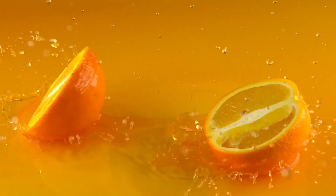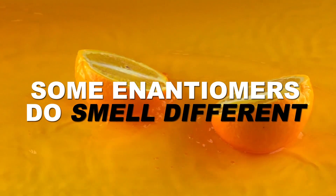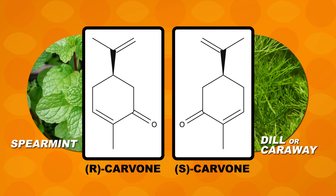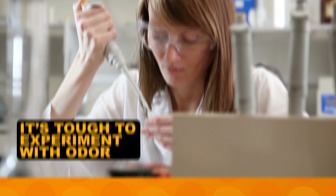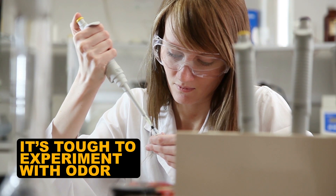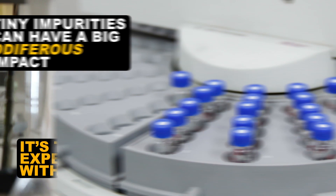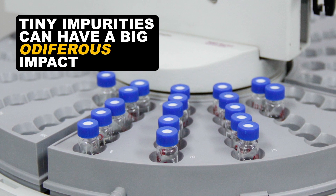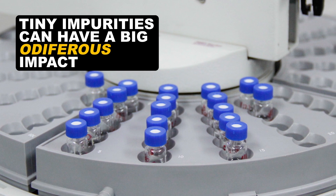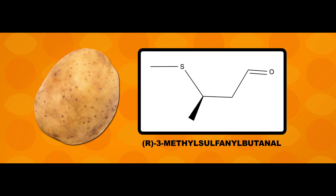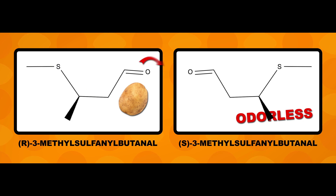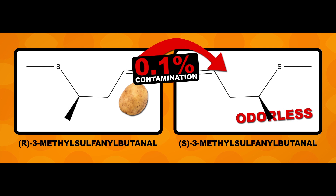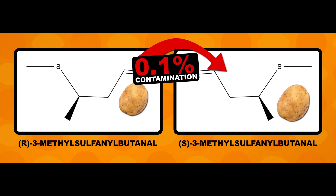So why is this so easy to believe and how did it become so pervasive? First off, some enantiomers actually do smell different. For example, R carvone smells like spearmint, whereas the enantiomer S carvone smells of dill or caraway. It's easy to assume that other enantiomers might also smell different from one another. Secondly, it's really easy to muddy the smell-study waters. Odor is something that's really tough to experiment with and understand — you have to make absolutely sure that the compound you're analyzing is 100% pure. Even tiny impurities can have a big odiferous impact. For example, the R version of this compound has a powerful potato aroma, while its enantiomer is odorless. But if your sample of S enantiomer was contaminated with as little as 0.1% of the smelly R enantiomer, you'd probably think both smelled of potatoes.